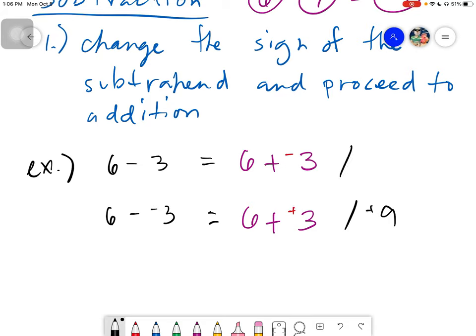And lastly, on this case, since they have different signs, you will subtract the smaller from the larger, which is 6 minus 3, the answer is 3. Then you copy the sign of the larger number, which is of course positive 6, so positive 9. Therefore, 6 minus 3 is positive 3, and 6 minus negative 3 equals positive 9.